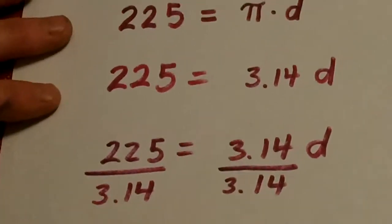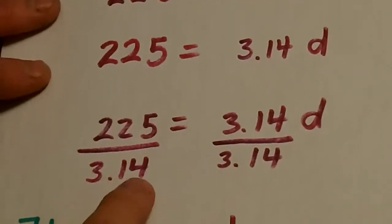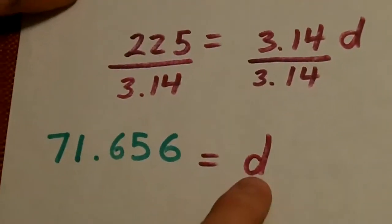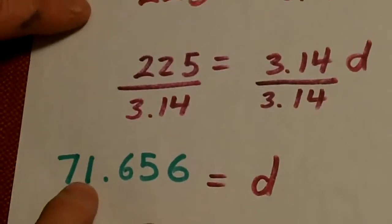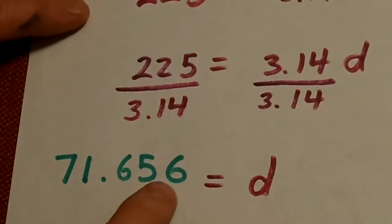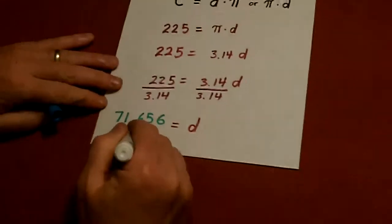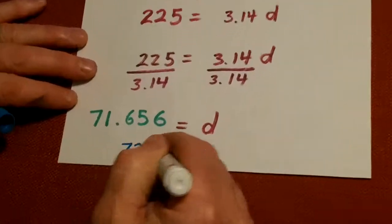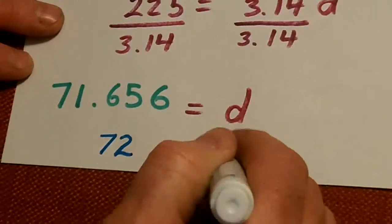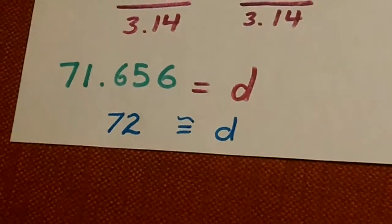And then, kids, we have to be able to do this, 3.14 into 225. The diameter will be equal to 71.656. And if we were going to round that off, 72 is about the diameter.